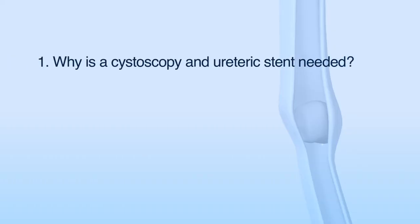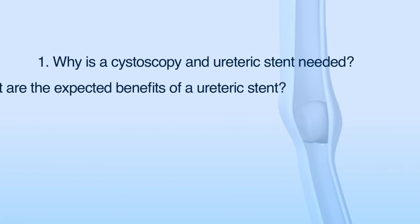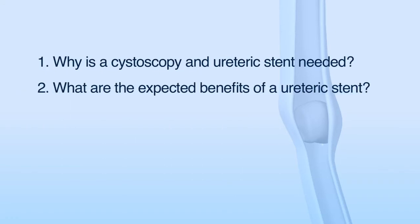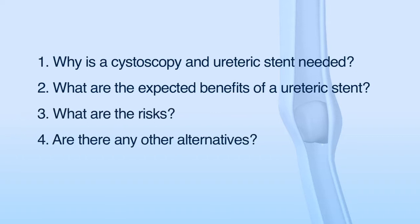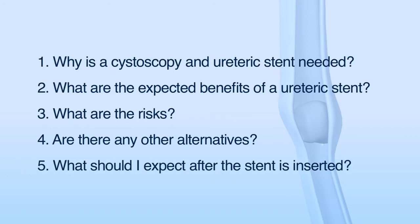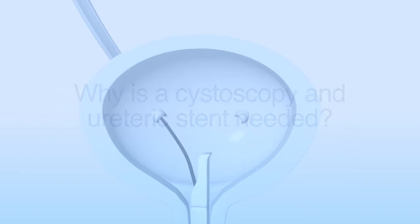Number one, why a cystoscopy and ureteric stent is needed. Number two, what are the expected benefits of a ureteric stent. Number three, what are the risks. Number four, are there any alternatives. And five, what to expect after the stent is inserted.